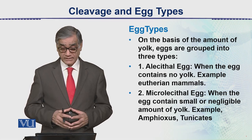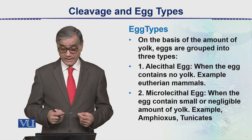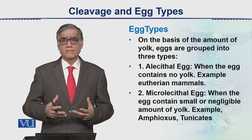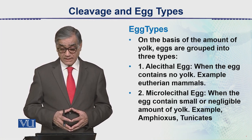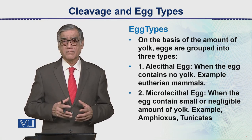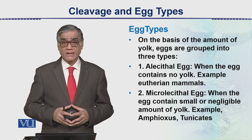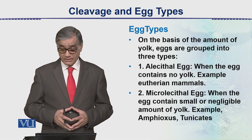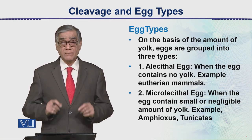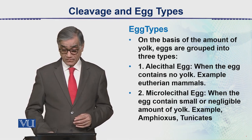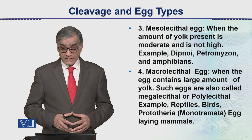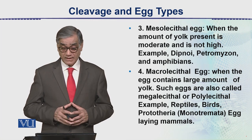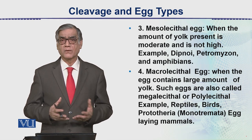First is the alecithal egg — when the egg contains no yolk, or if present it is a very little amount. Examples are eutherian mammals. Second is the microlecithal egg — when the egg contains a small, negligible amount of yolk. This is the case in Amphioxus or the tunicates, which are protochordates. Third is the mesolecithal egg — when a moderate amount of yolk is present.